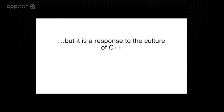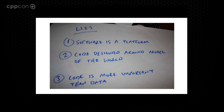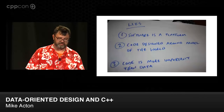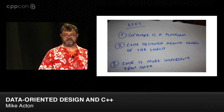But to a large degree, the only reason we're talking about this, the only reason I've ever talked about this, is because it has been a response to the broader culture that C++ has engendered. And most prevalently are what I call the three big lies. Those are: lie one, that software is a platform in and of itself; lie two, that code should be designed around a model of the world — your mental model of the world; and the third lie is that code is more important than data.